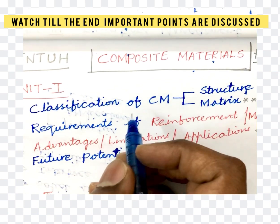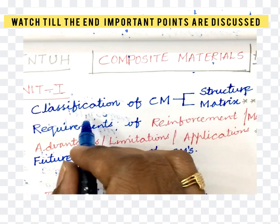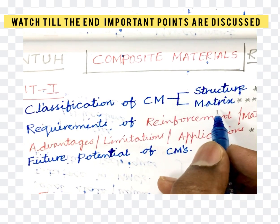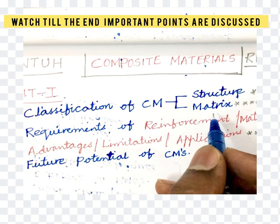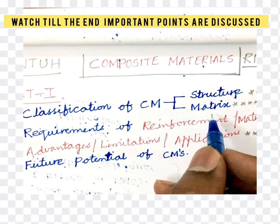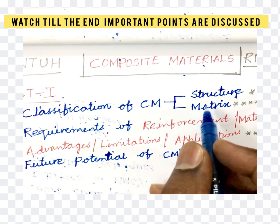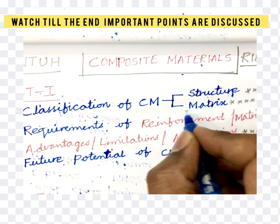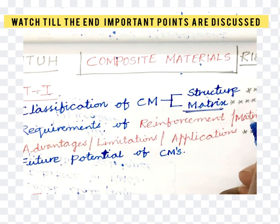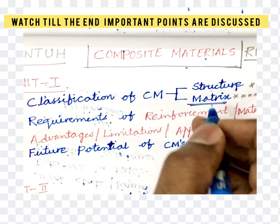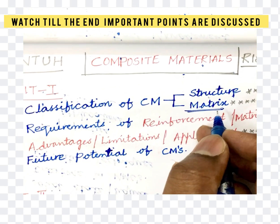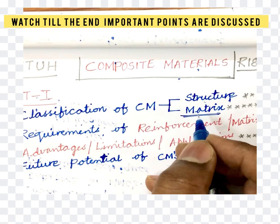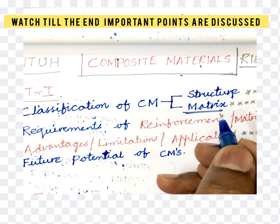Let us look into Unit 1. Unit 1 is all about the classification of composite materials based on structure as well as matrix. This is one definite question in the final examination — they may ask based on structure and based on matrix. Most of the time the question is repeated on matrix, as per previous year question papers. They may ask you to define structure with examples and define the matrix with examples.